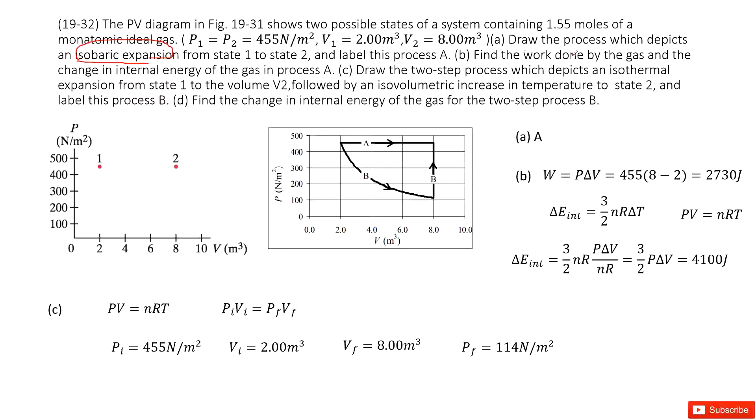B. We need to find work done by the gas and change in internal energy in the process A. So easy, right? The work done from A part is P times delta V. From this picture, we can see the pressure is given 455 Pa. And the pressure changes is 8 minus 2, just 6 meter cube. Then we can get the work done.